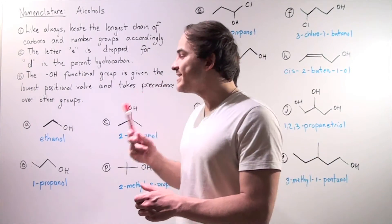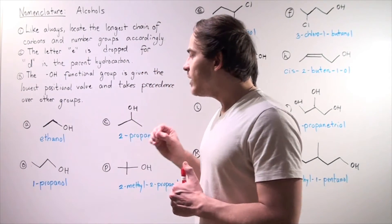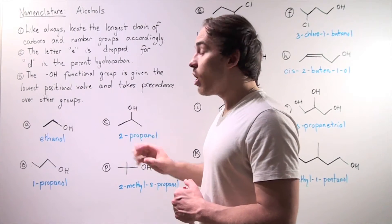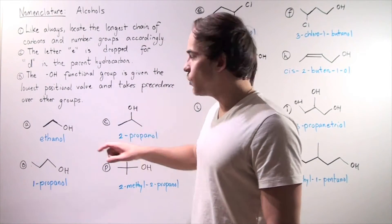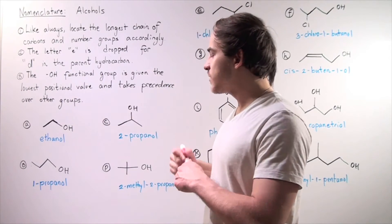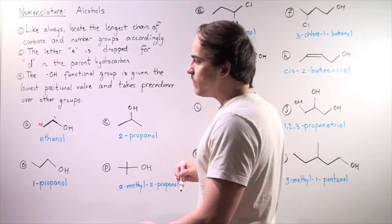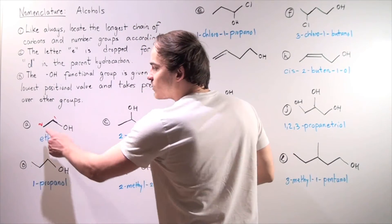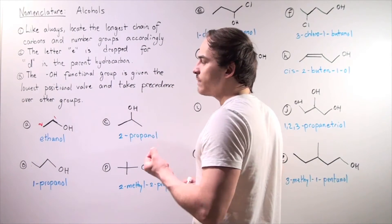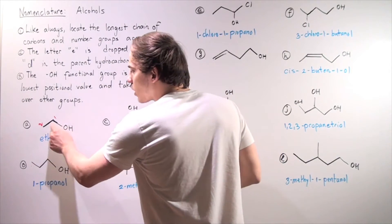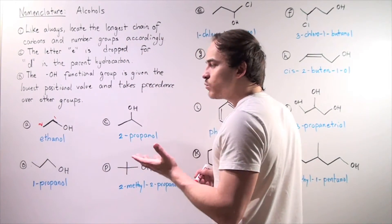Let's use red to label our carbons. In example A, we want to find the longest possible chain and the lowest possible value for our hydroxy group. That means we begin with this end: one, two. Note that if we begin at the other end, we get one, two, and hydroxy would have a value of two, not one. Since we're looking for the lowest value, we start from this end. So we have a two-carbon backbone, which means we have ethane.